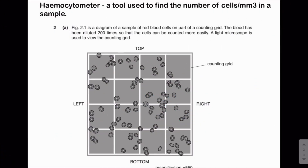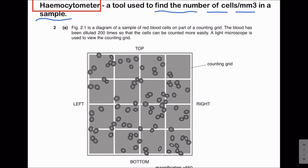Assalamu alaikum everyone. In this video lecture we will be discussing a practical skill: the use of the hemocytometer. We use the hemocytometer to find the number of cells per millimeter cube in a sample. For example, if we take a blood sample from a patient and want to know the number of red blood cells per millimeter cube, we can find it using the hemocytometer. We can also obtain a semen sample and use the hemocytometer to find the number of sperm cells per millimeter cube.